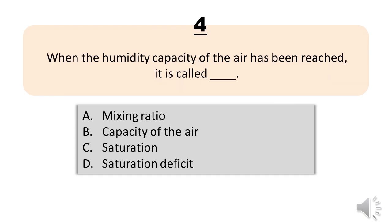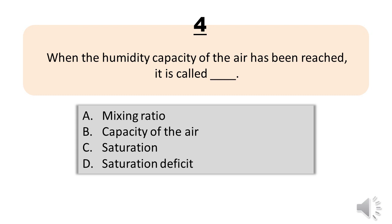Number 4. When the humidity capacity of the air has been reached, it is called blank. A. Mixing ratio. B. Capacity of the air. C. Saturation. D. Saturation deficit. The correct answer is Letter C. Saturation.